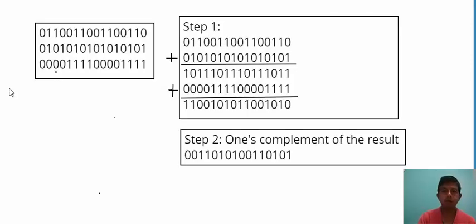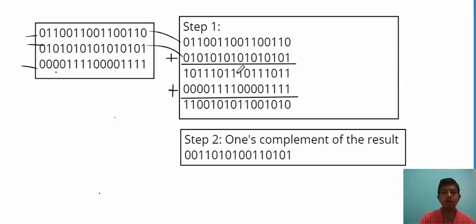Let us take our first example — this is a without-carry example. Say we have three 16-bit numbers. In the first step we add the first two numbers, obtaining their 16-bit sum. Then this result is added to the third number and we get the final result. This is a without-carry example — there are no carries finally, so this is the result of the first step.